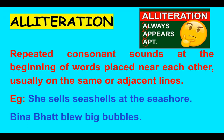Let's see a few examples. She sells seashells at the seashore. Beena Bhat blew big bubbles. Children enjoy this poetic device because they are like tongue twisters, and tongue twisters really help you improve the fluency of your language. If you observe both examples, there are consonant sounds used more than two times. Hence, it is alliteration.